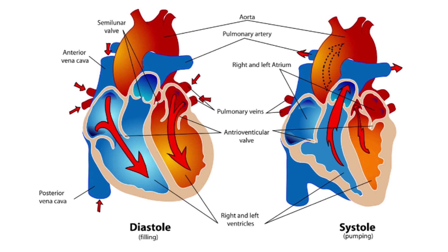For example, if I use the term atrial systole, it means both the right atrium and the left atrium contract simultaneously. A word of caution though — in the beginning, learning the cardiac cycle is a bit confusing, at least it was for me, but my advice is to go through it until you understand.